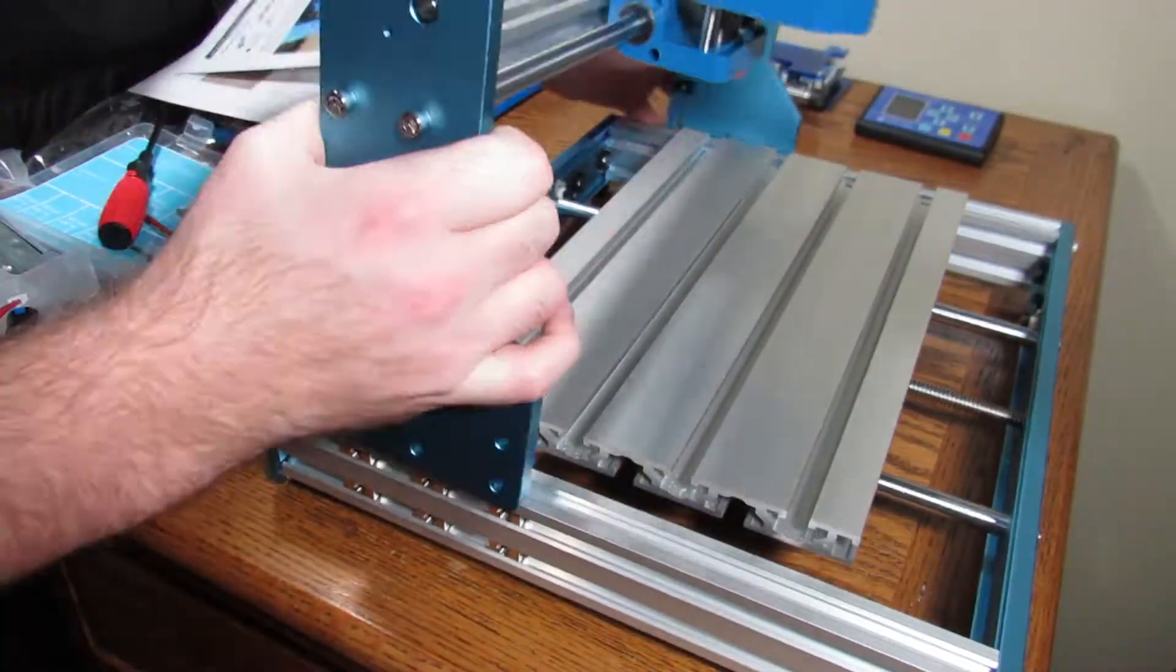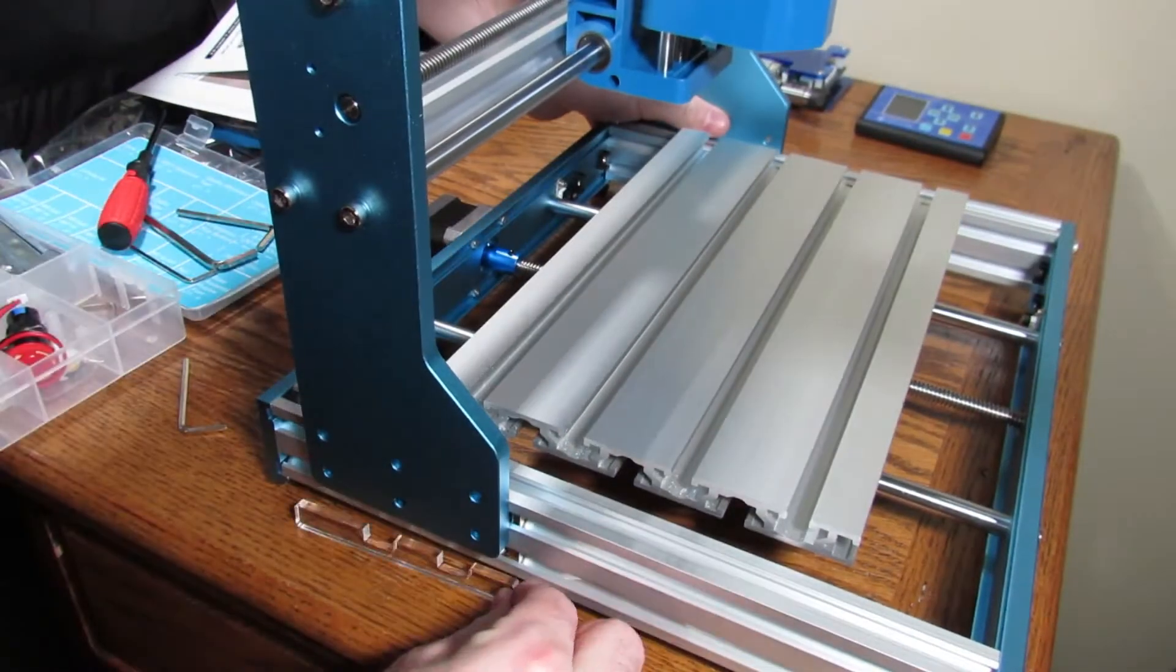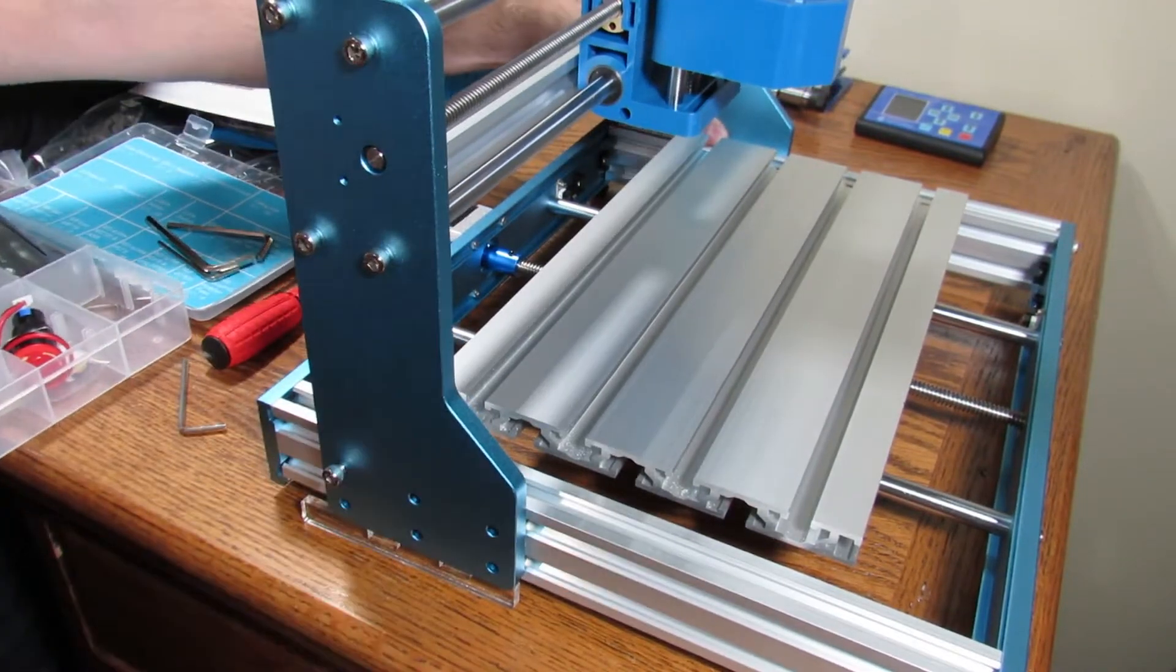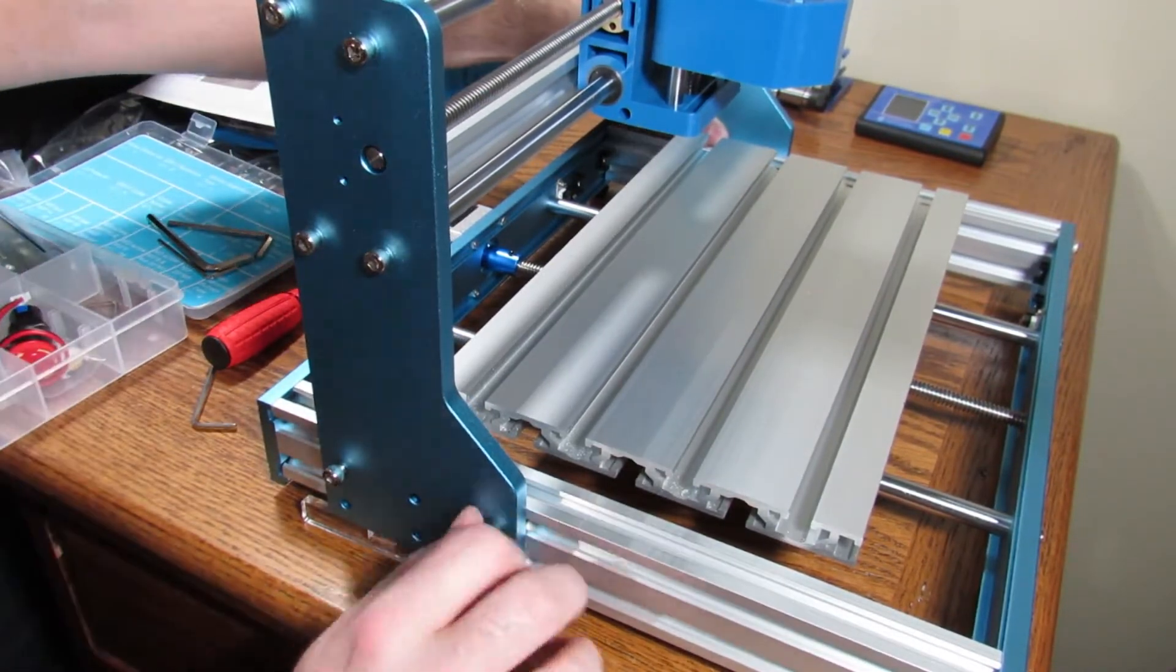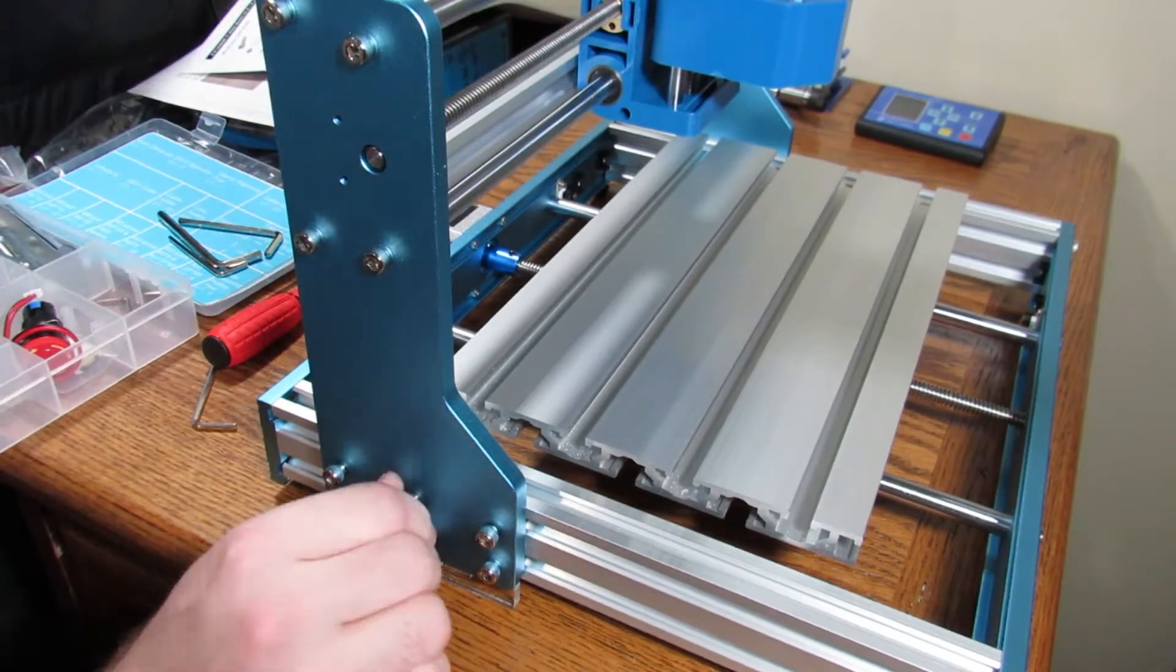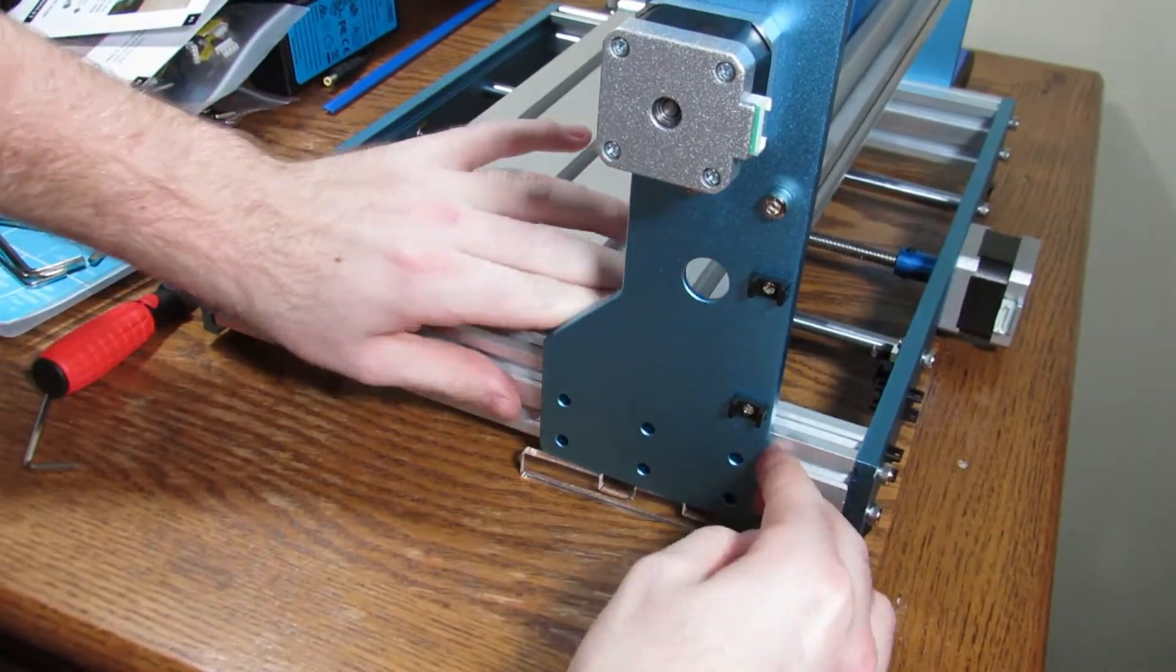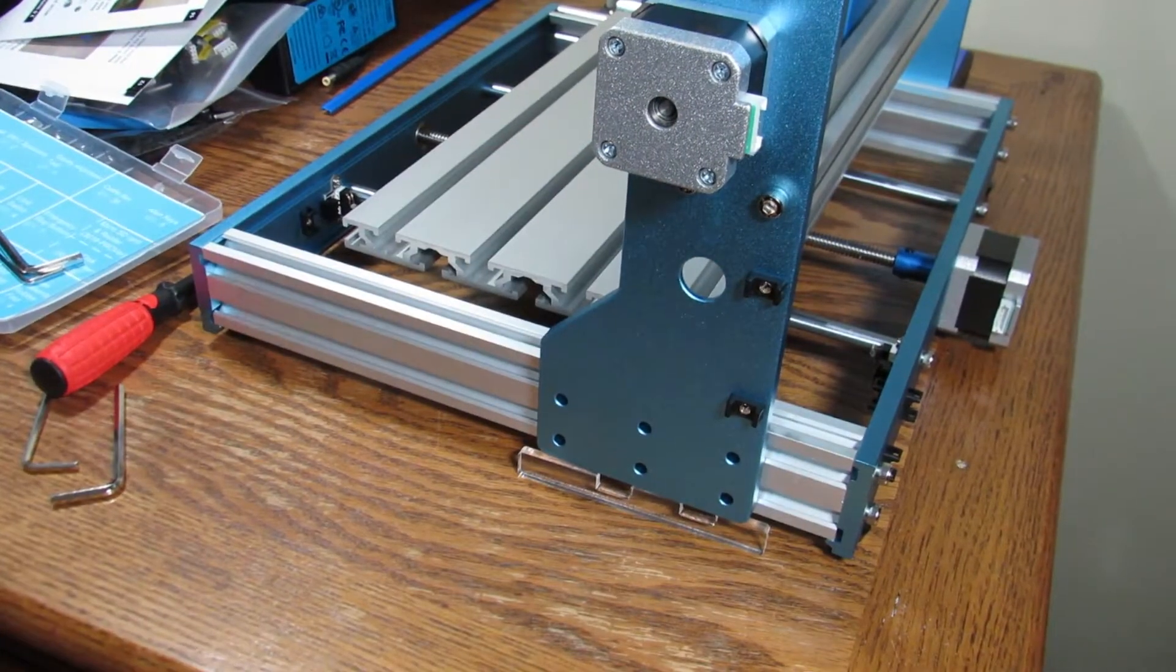So after that, go ahead and put on the gantry and make sure you use that acrylic piece as a little setup there. Once you get one bolt in, they all should fall right into place. And then as simple as putting them in, spin around. And I did put the four feet on the bottom. I don't know if I showed that step or not.